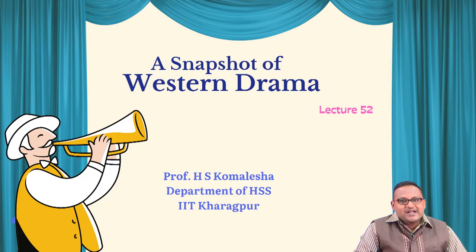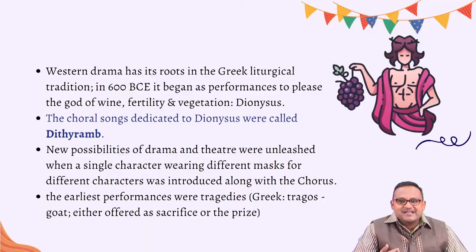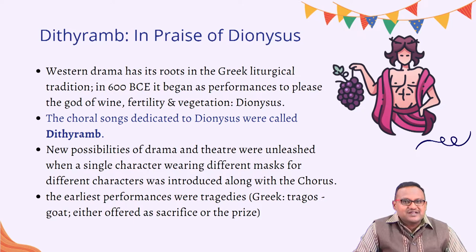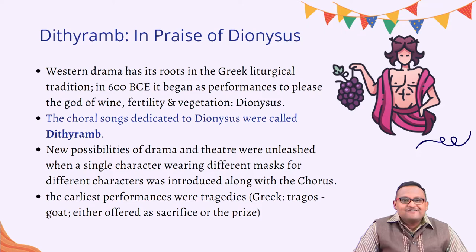Let us look at how exactly western European drama began. It has its beginnings, like ancient poetry, in liturgical and religious traditions. Approximately speaking, around 600 BC, drama began as a kind of poetic performance to please the god of wine, fertility, and vegetation called Dionysus. In other words, drama is a genre of literature basically dedicated to Dionysus — the patron god of drama in the Greek context.